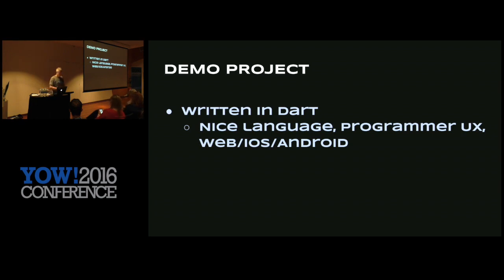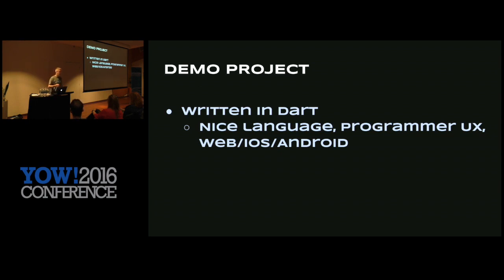I'm going to do a little demo project in Dart, which is the language that I'm working on. It's a really nice language. We put a lot of effort into thinking about the user experience for the programmer — the suggestions, the tooling, and the cycle time. How long does it take from when you make a change to when you actually have the new version of the program running? We want to keep that under a second because that makes a lot of difference to programmer productivity.